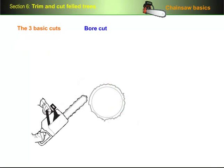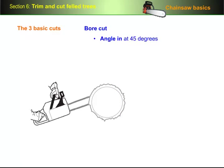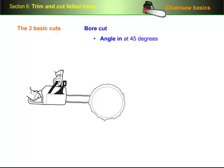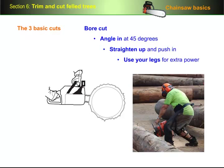The safest way to do a bore cut is to angle in at 45 degrees using the bottom of the nose until the bar is in to the full depth of the nose. Then straighten up and push in to bore through the wood. It's best to use your legs for extra power as you push the saw in.